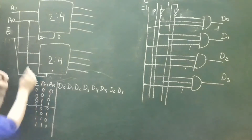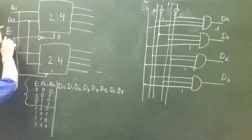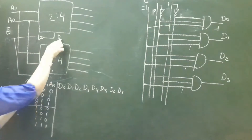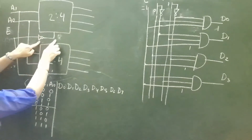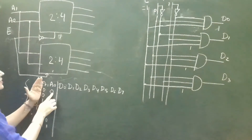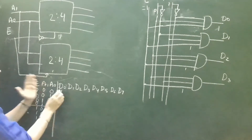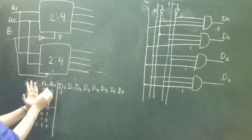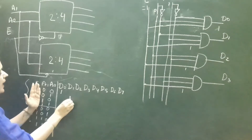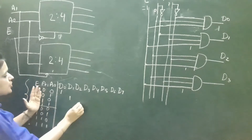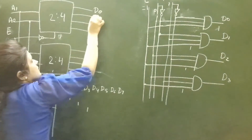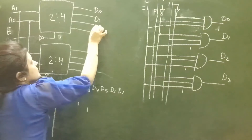We can see how it works: when E equals 0 and A1 A0 is 00, this upper decoder is enabled so D0 will be high. When E equals 0 and A1 A0 is 01, D1 will be high. Similarly, D2 will be high for 10 and D3 will be high for 11. These are D0, D1, D2, and D3.